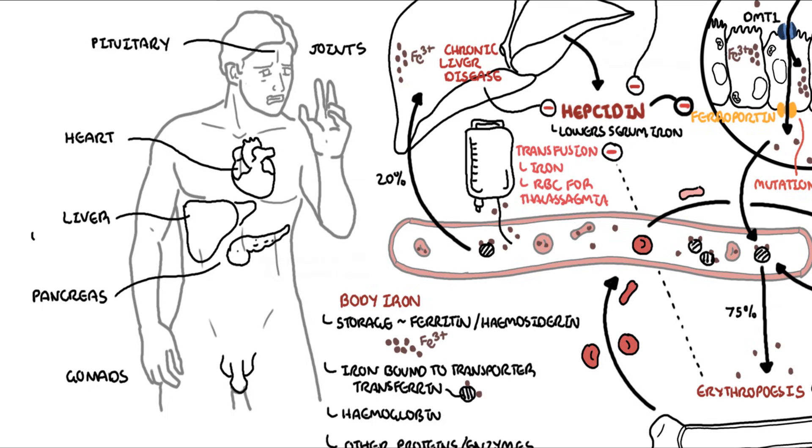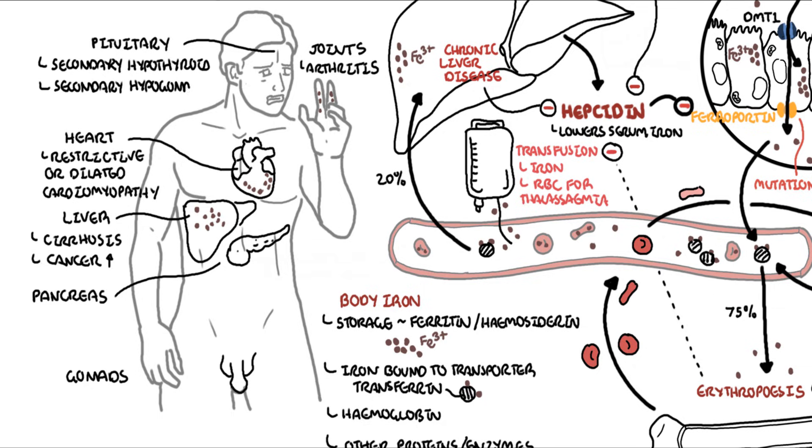Here they undergo biochemical reactions which creates reactive oxygen species, which in turn causes tissue damage, inflammation, and fibrosis. For example, in the liver it can cause cirrhosis as well as increase the risk of hepatocellular carcinoma. In the heart, it can cause restrictive or dilated cardiomyopathy as well as arrhythmia. In the joints, it causes arthritis. In the pituitary glands, when you have iron depositing here, it can cause secondary hypothyroidism or secondary hypogonadism. In the pancreas, the deposition of iron can cause diabetes mellitus. In the gonads, it can cause testicular atrophy amongst many other things.